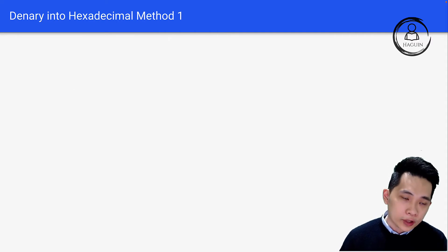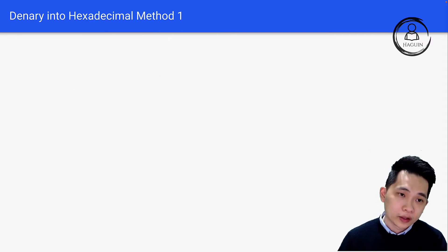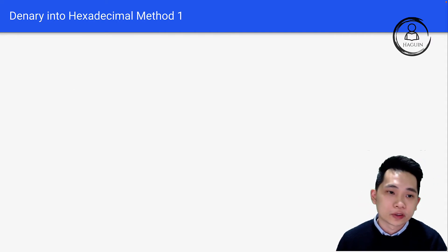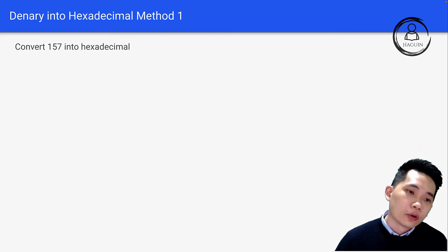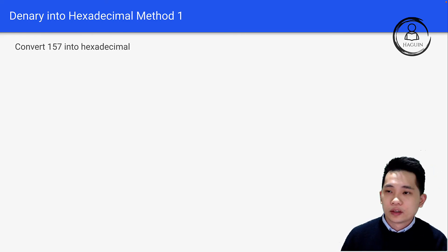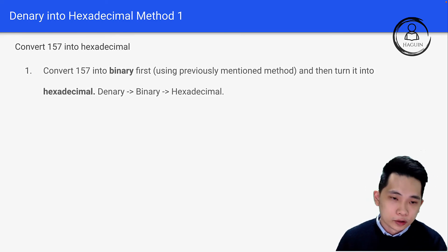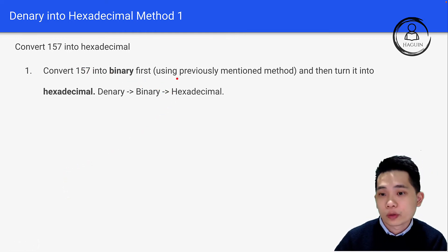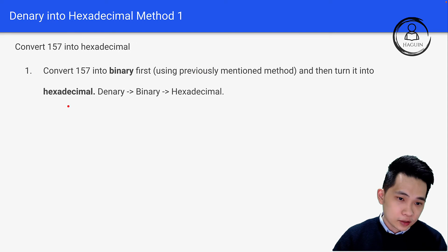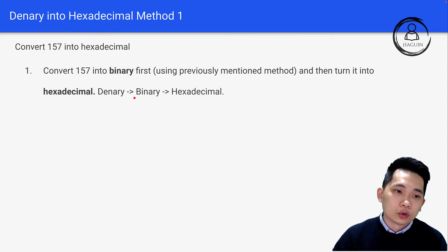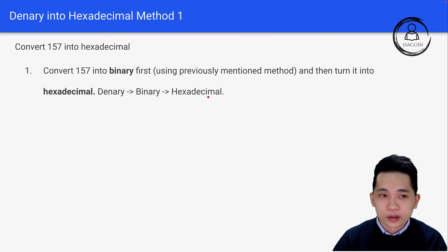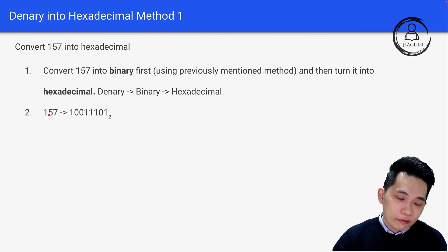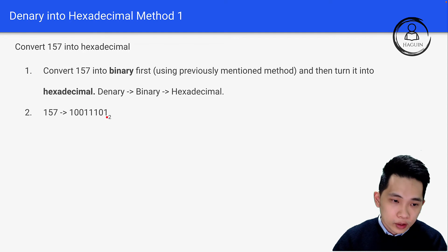For denary to hexadecimal, there are two methods. Let's look at Method 1 first. How do you convert 157 into hexadecimal? First, convert 157 into binary using the previously mentioned method. 157 in binary is 10011101.